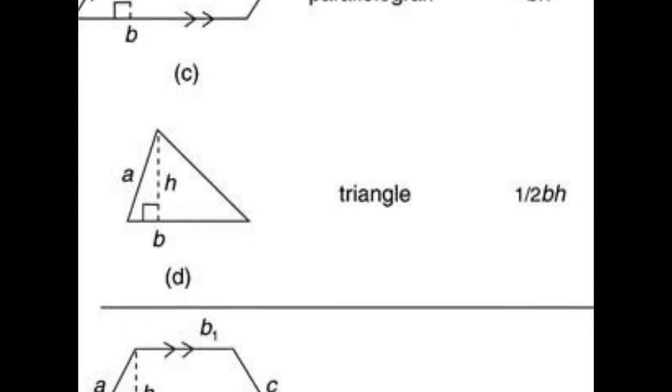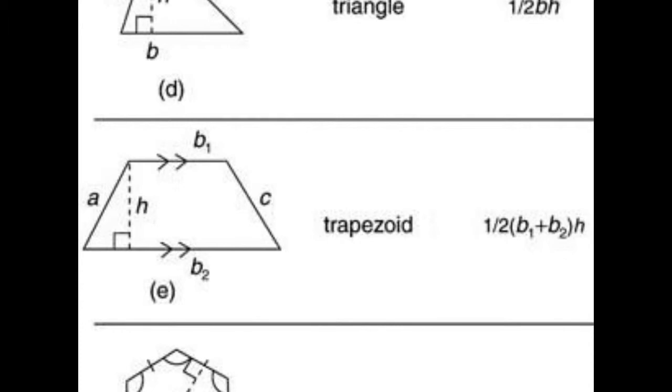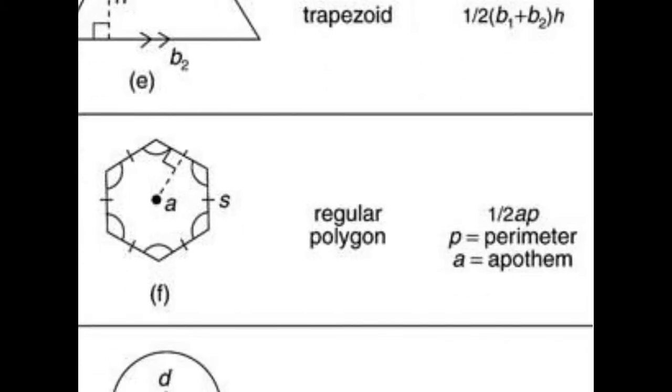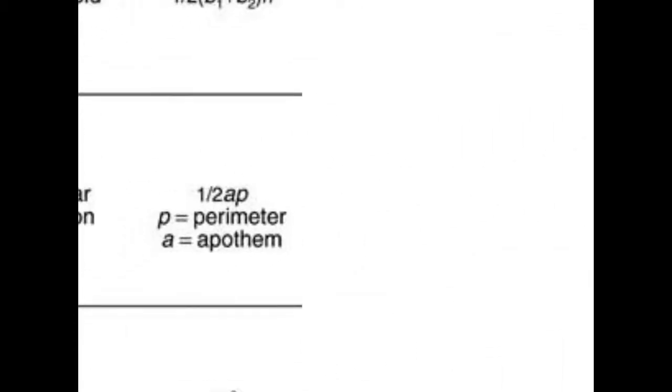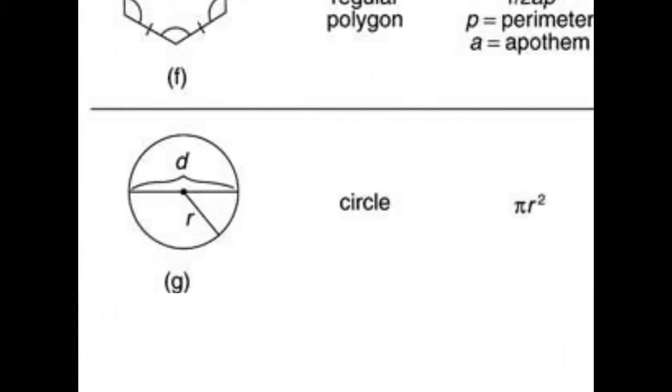Take half base, multiply height. Area of trapezoid is one half of the height with base 1 plus base 2. Area of regular polygon is half AP where A is apothem and P is perimeter. Area of circle is pi R squared. Now we can calculate area, so let's cut to the intro!